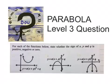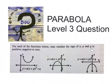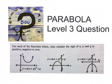Good day! In this video we're going to look at the parabola — the typical grade 11 and 12 level 3 question. They ask us here, for each of the functions below, state whether the sine of A, P and Q is positive, negative or zero. We're working with a turning point formula every time. What makes it level 3 is that there are no numbers involved, so you can't use your calculator. You must understand what the job of A, P and Q is.